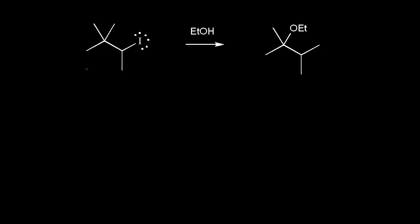Since the SN1 mechanism involves the formation of a carbocation, a rearrangement is possible. Let's look at this SN1 reaction. On the left is our alkyl halide, ethanol is our solvent, and on the right is our product.